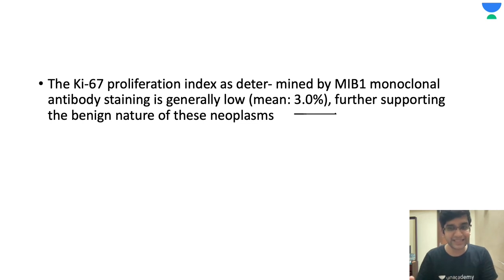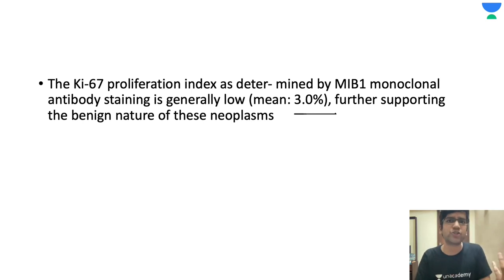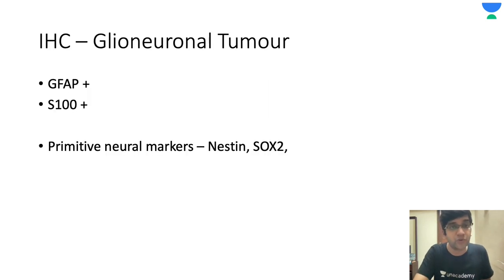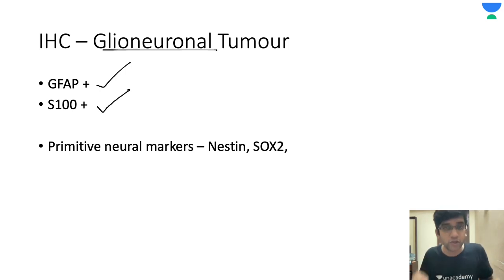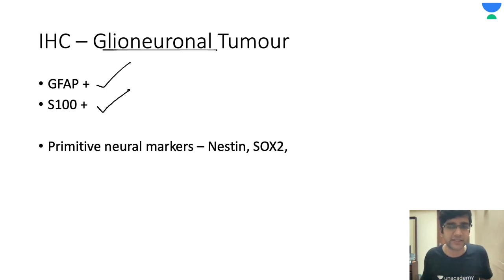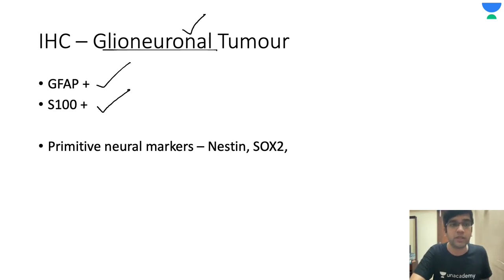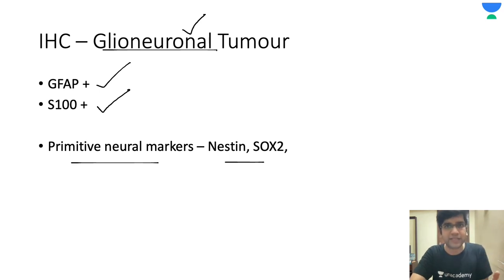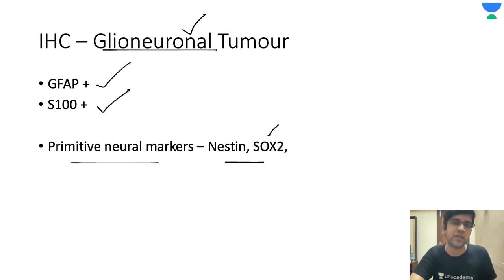As I said, SEGA is a glioneuronal tumor. When I say gemistocytic astrocytoma, it's a glial tumor, not neuronal. Here, it's a glioneuronal tumor. So I have markers for glia — that's GFAP — and also synaptophysin, a neuronal marker. If you're finding it difficult on morphology to differentiate gemistocytic astrocytoma from SEGA, go for IHC markers. Synaptophysin will never be positive in gemistocytic astrocytoma. GFAP will be positive in both because both have glial origin. The neuronal marker is very important. If your lab has Nestin or SOX2, do them — they also will be positive.